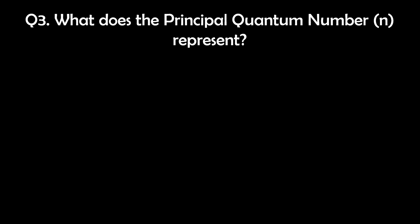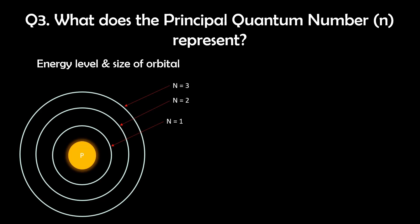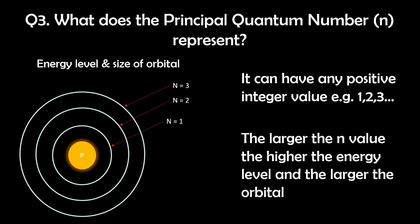Question 3. What does the principal quantum number N represent? The principal quantum number N indicates the energy level and size of an electron. It can take any positive integer value, for example, 1, 2, 3, etc. The larger the value of N, the higher the energy level and the larger the orbital.